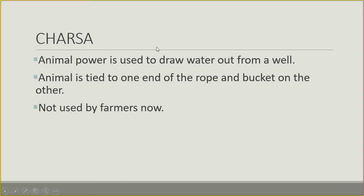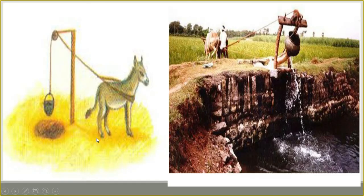The next method is called Charsa. In Charsa, instead of a counterweight, animal power is used — that is the key difference between Charsa and Shadav. An animal is tied to one end of the rope and a bucket to the other end. As the animal moves forward, the bucket draws water out of the well. It is not used by farmers these days.